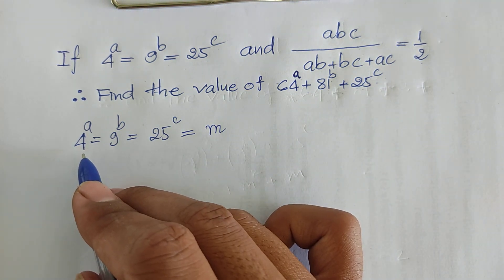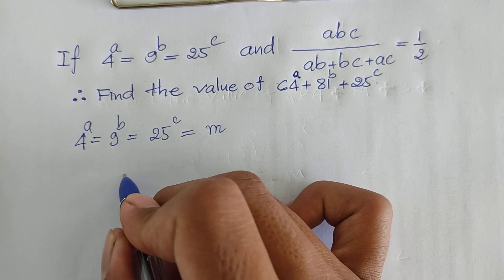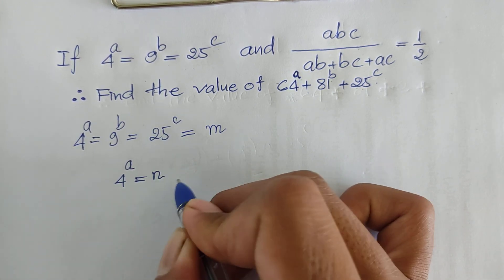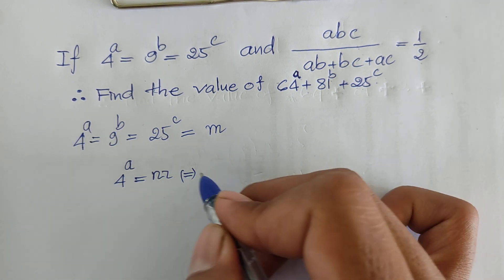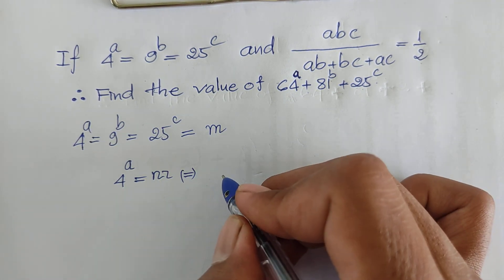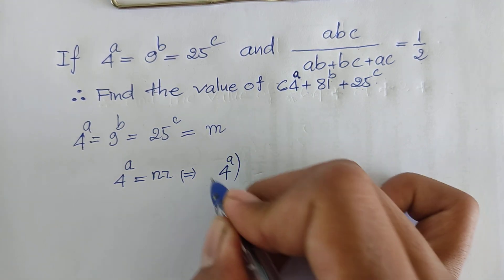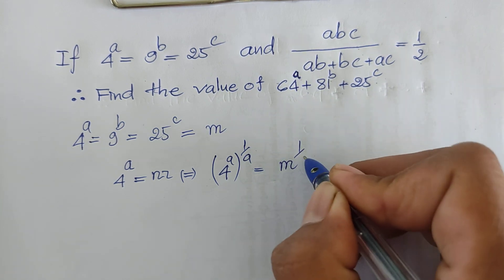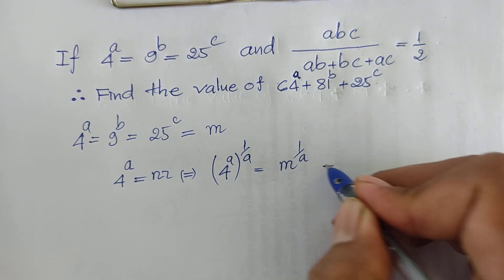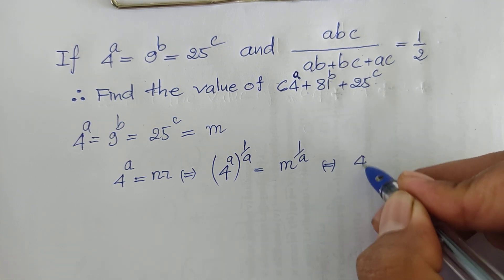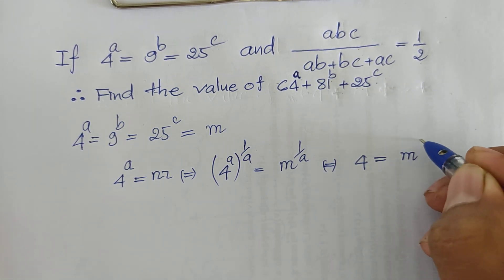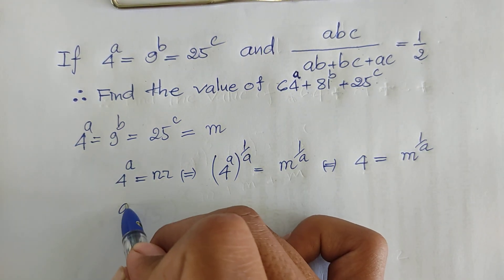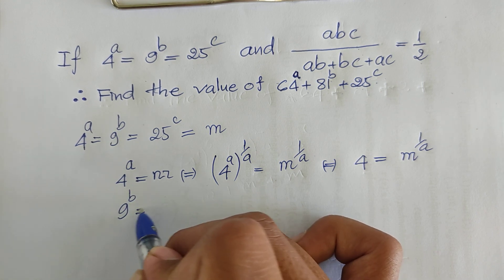Since 4^A = M, I raise both sides of this equation to the power of 1/A. So 4^(A · 1/A) gives us 4 = M^(1/A). Similarly, since 9^B = M, raising both sides to the power 1/B gives 9 = M^(1/B).